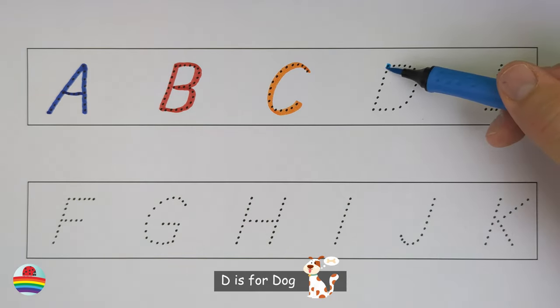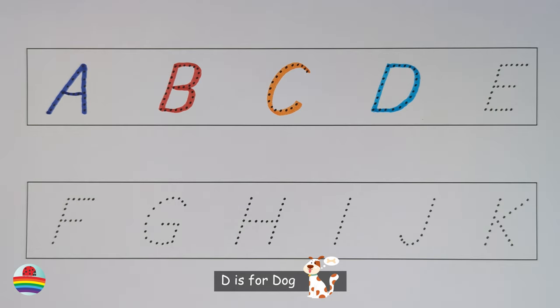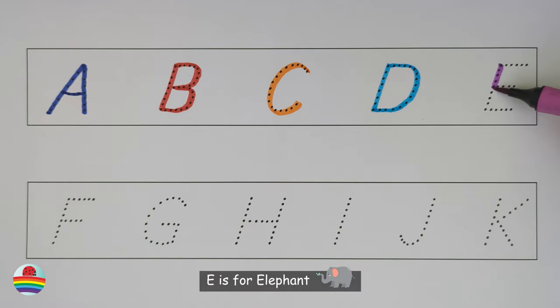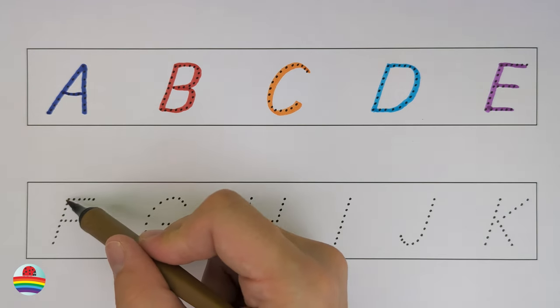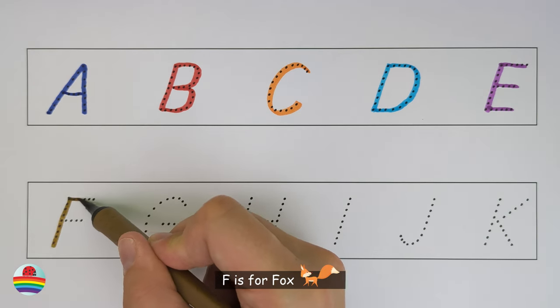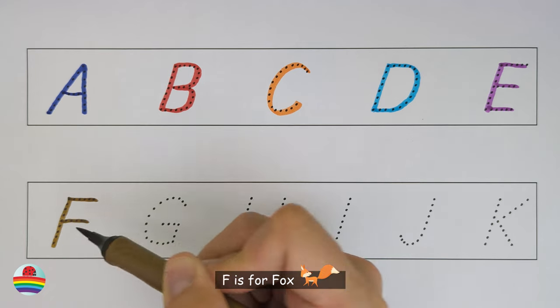D. D is for Dog. D. E. E is for Elephant. E. F. F is for Fox. F.